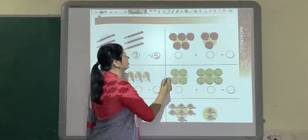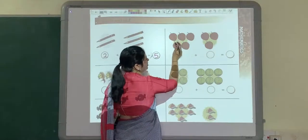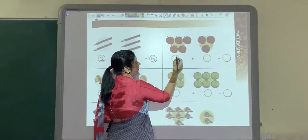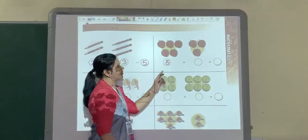Like this, one more example. How many strawberries are there? 1, 2, 3, 4, 5. So you will write here 5.